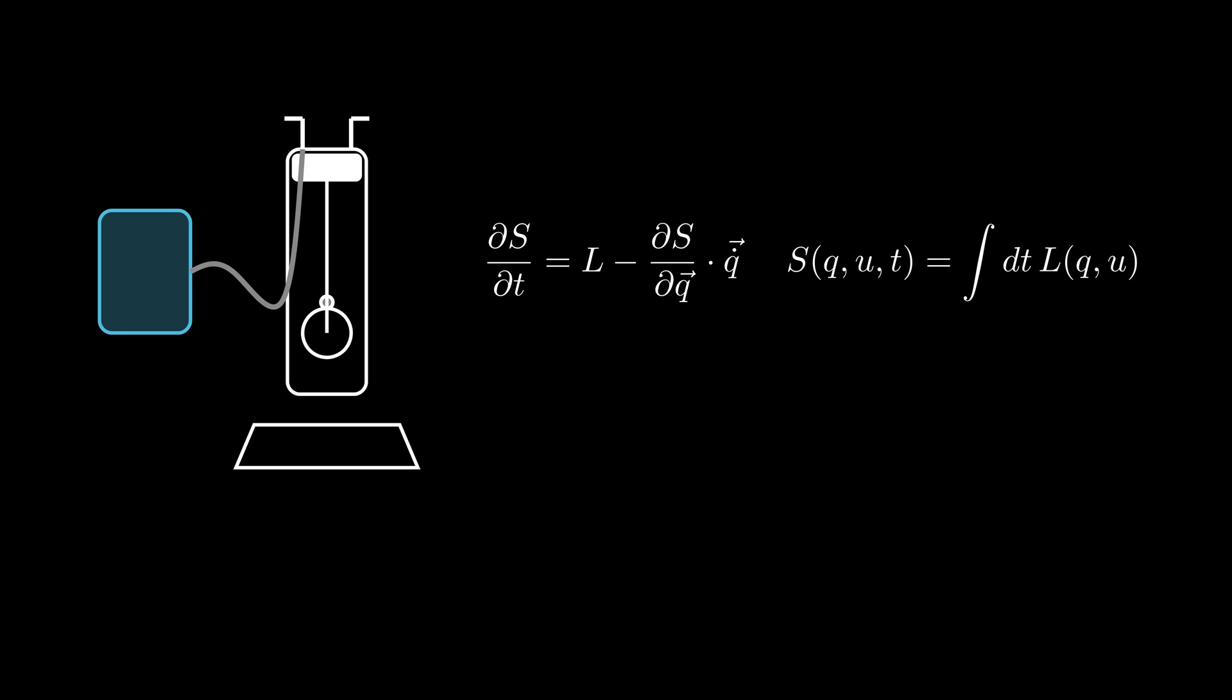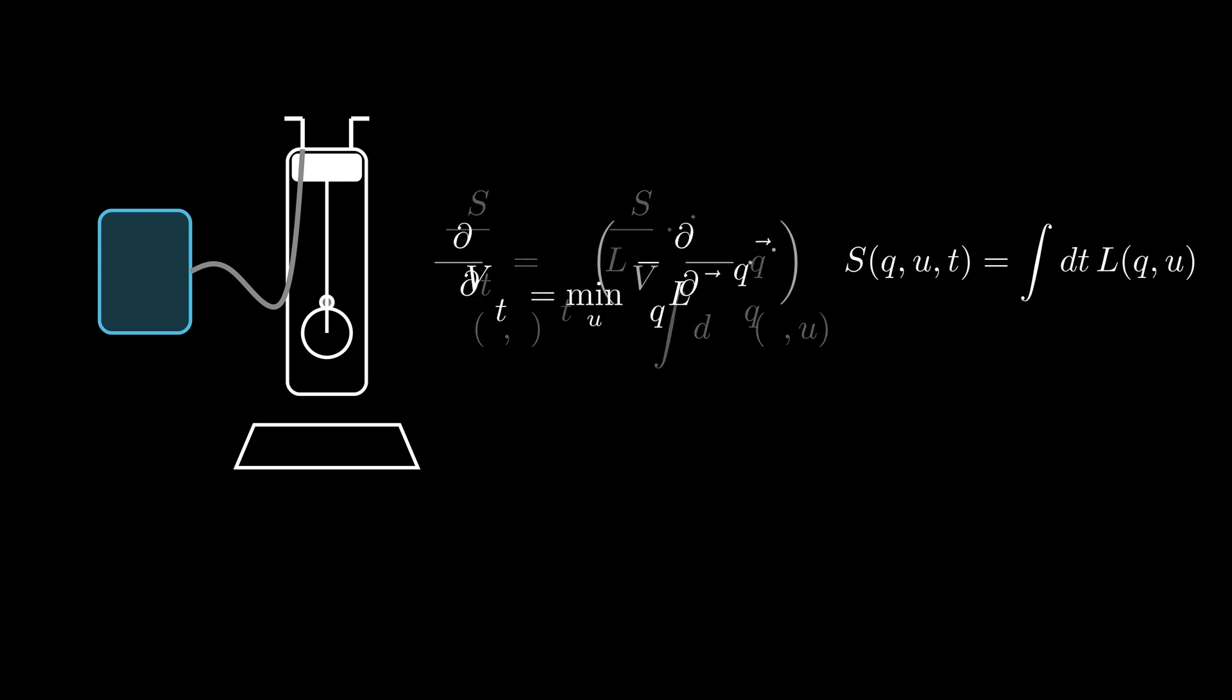Let's now push things one step further toward reinforcement learning and define the value function as the optimal cost. One difference between the Hamilton-Jacobi formalism of classical mechanics and the Hamilton-Jacobi-Bellman formalism of optimal control theory is to replace the action potential S with this value function and rewrite the differential equation in the following form.